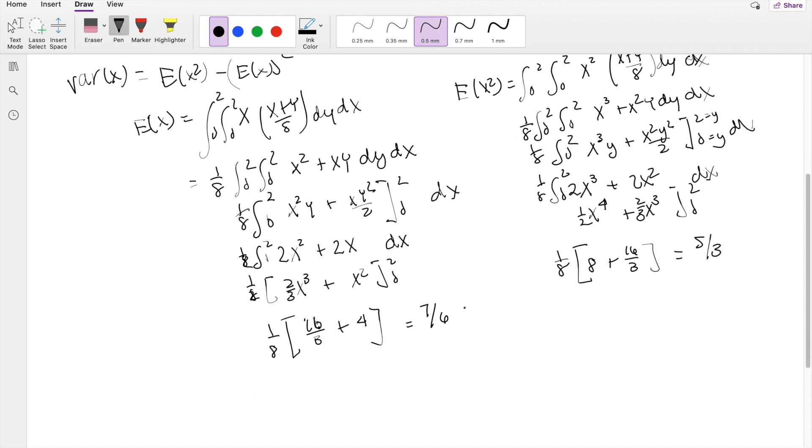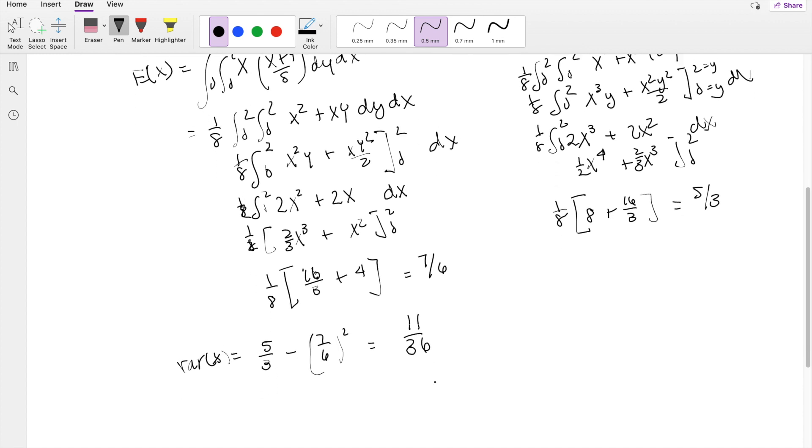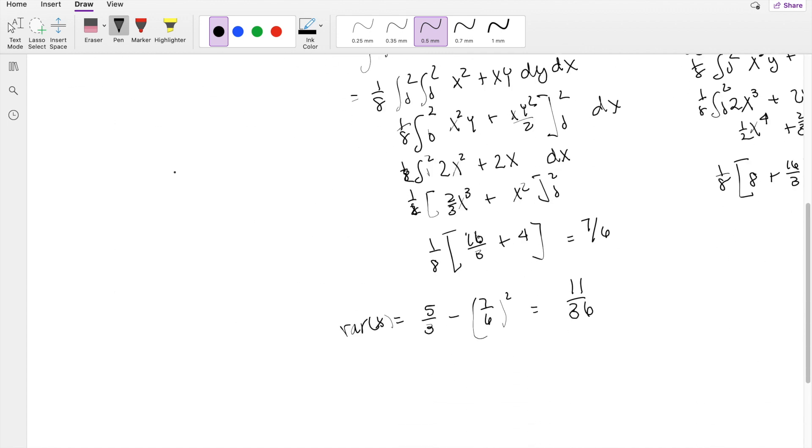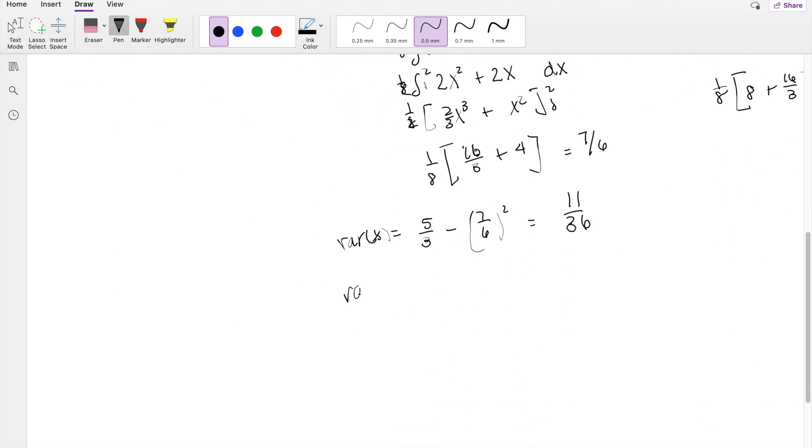So the variance of x, plugging into our formula: 5/3 minus 7/6 squared, equals 11/36. Because this is symmetry—I can interchange x and y and it won't change anything—the variance of y is also equal to 11/36.